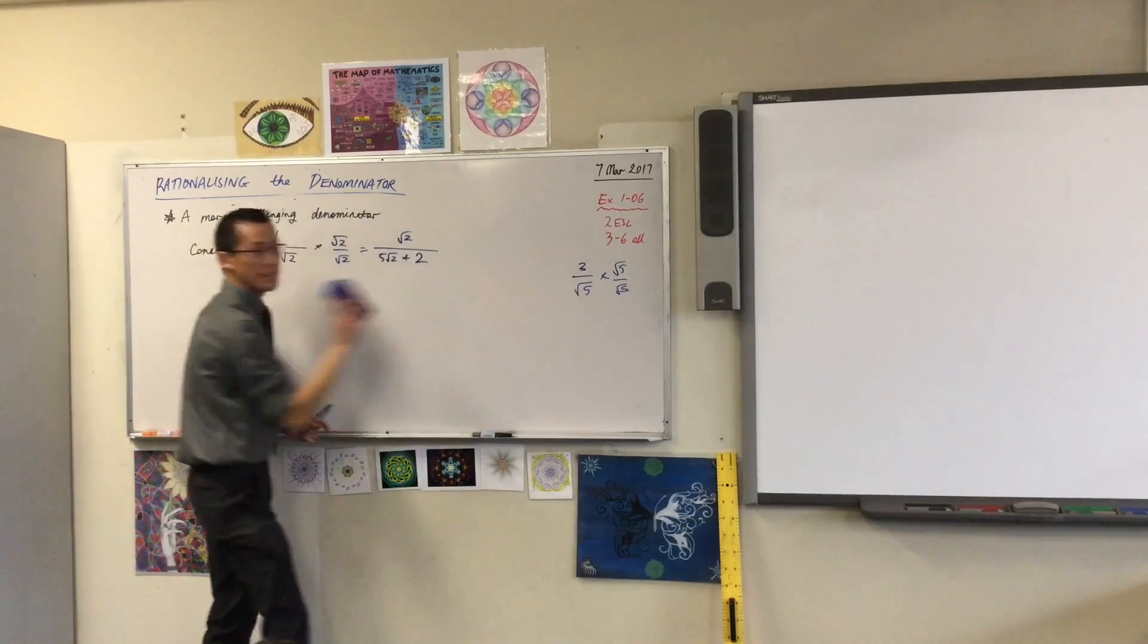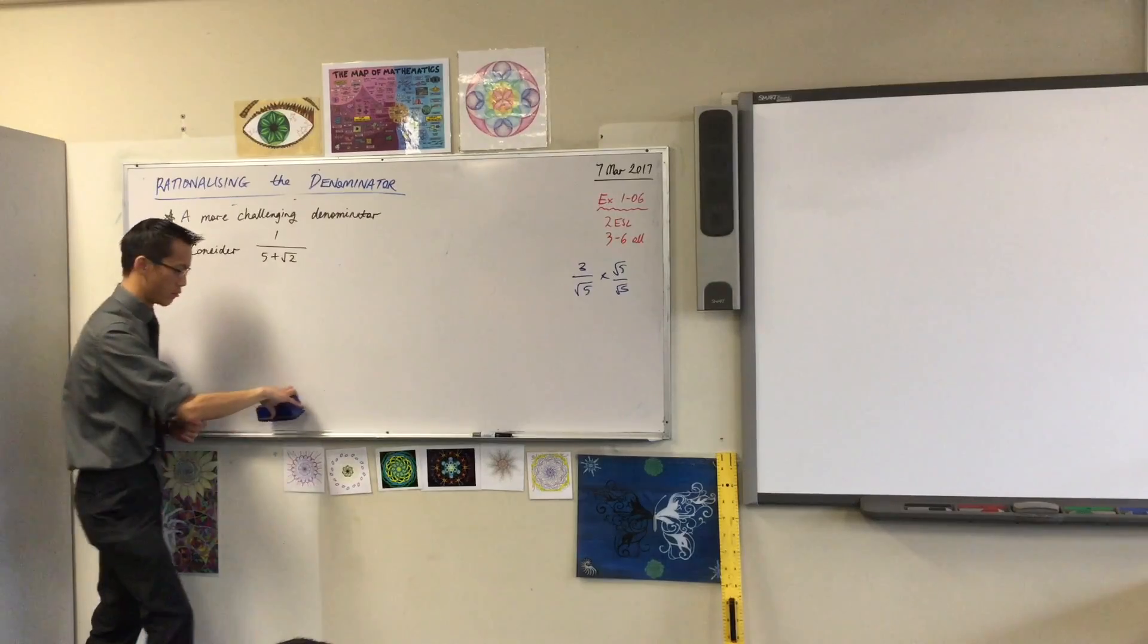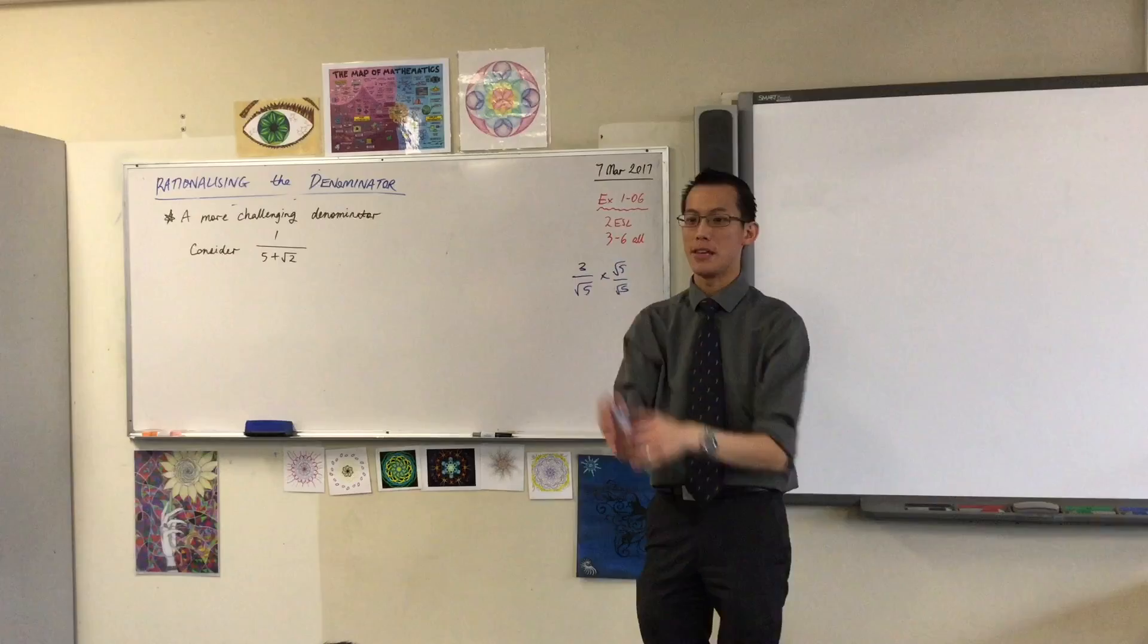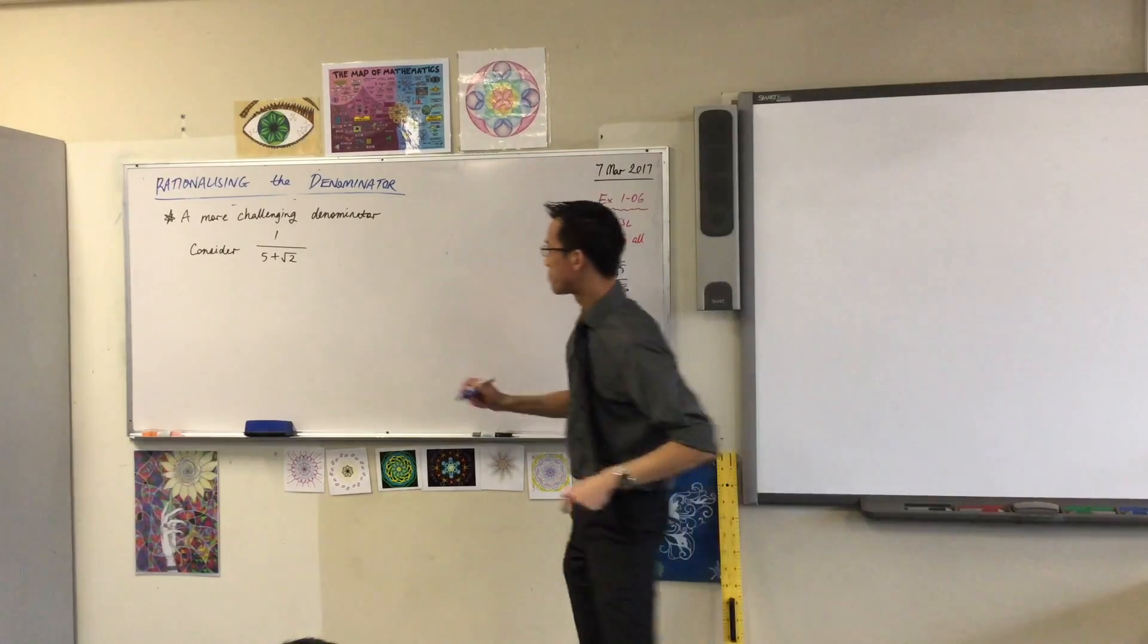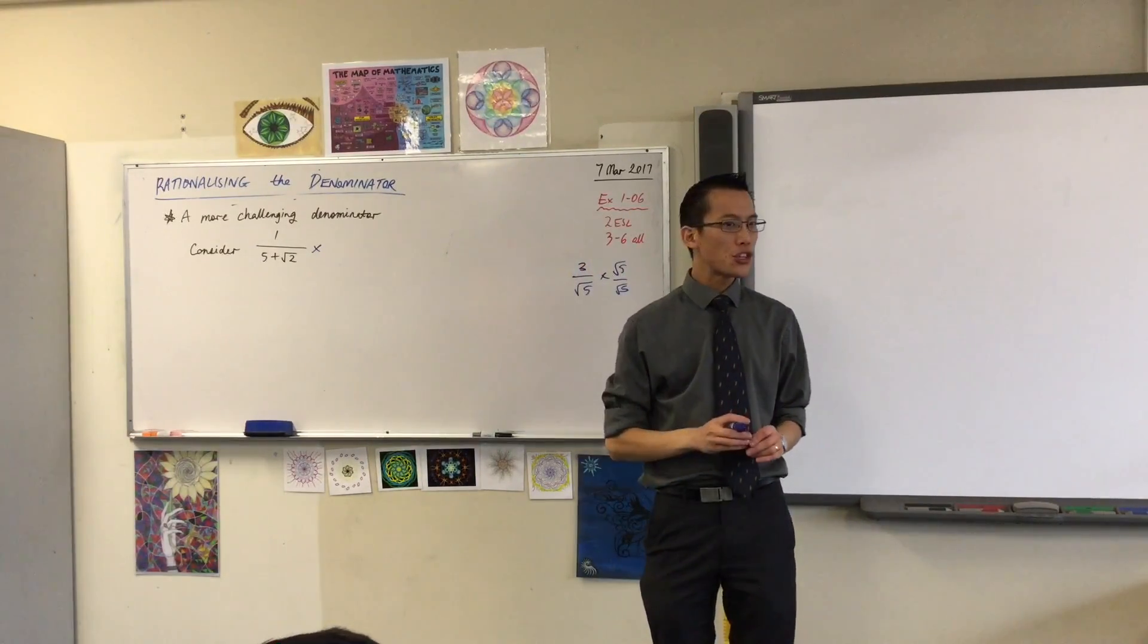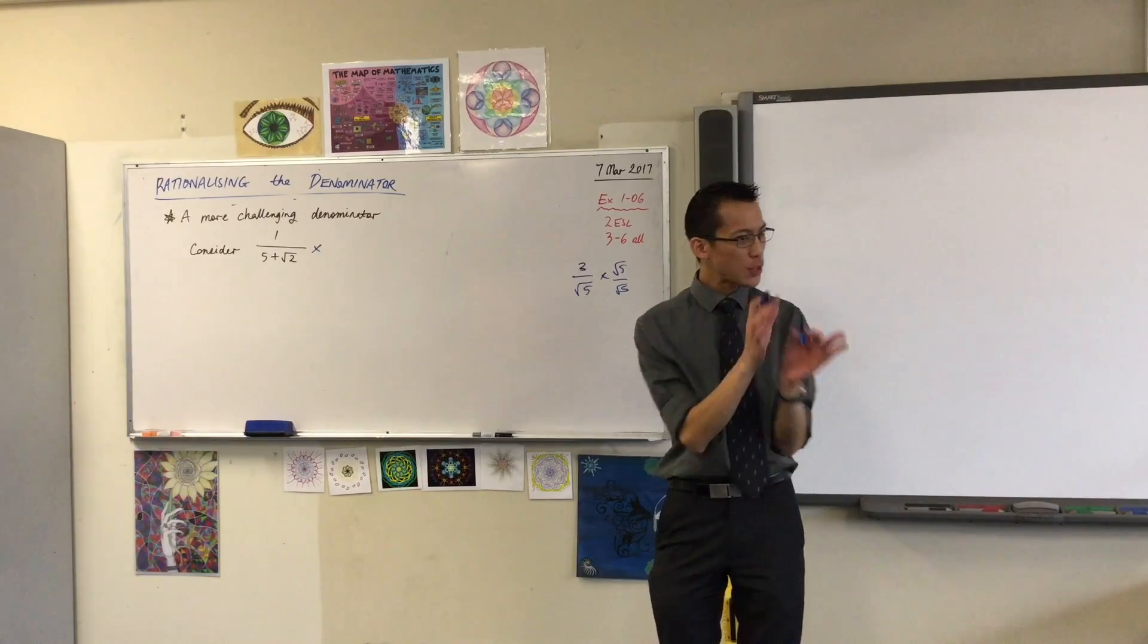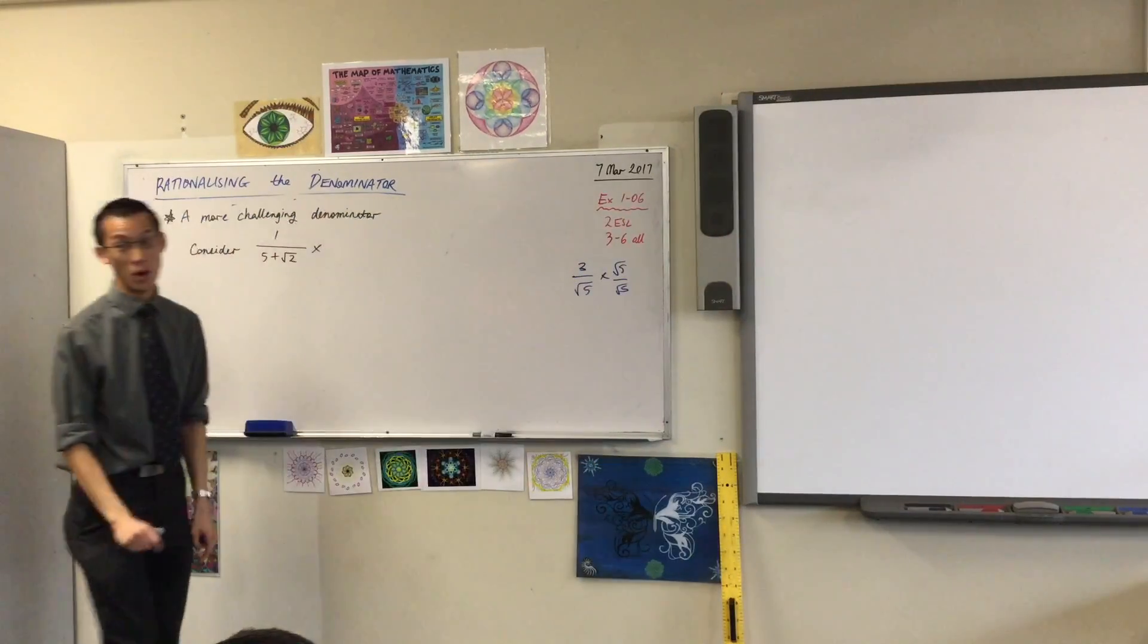So I'm going to show you, now you can pick up your pens, I'm going to show you what will rationalize this denominator. And this is a super useful skill. It's a bit harder than what you're being expected to do now but I think you guys can manage it if you stay with me. I'm still going to multiply by something over something. But I'm going to choose an unusual something. I'm not going to explain why I chose it just yet. I'm going to wait until the end. I wonder if you can work it out with me. Watch.